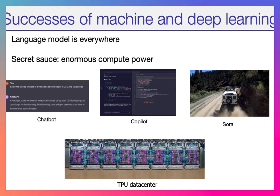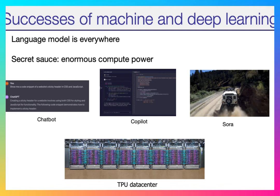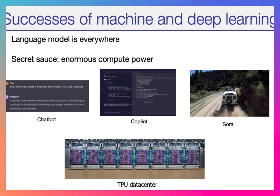Language models are everywhere — from chatbots, code copilot, or even image generation and video generation, like Google's Imagen or OpenAI's recent release Sora. All these incredible successes are based on language models. Understanding language really well means a lot for various AI applications. One of the secret sources is our techniques for building language models really leverage enormous compute power. Today I'm going to focus on how these techniques scale with compute and what are the remaining bottlenecks.